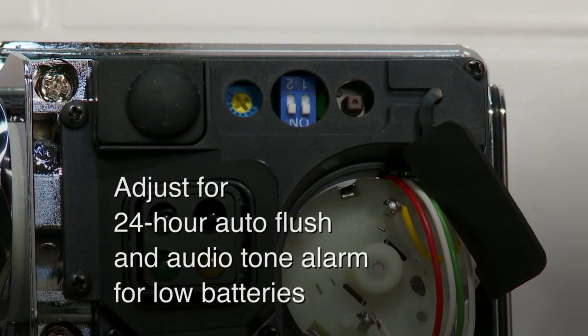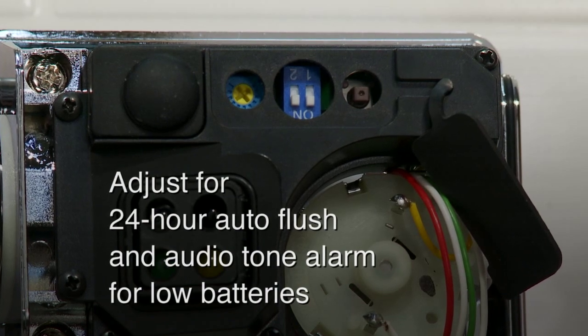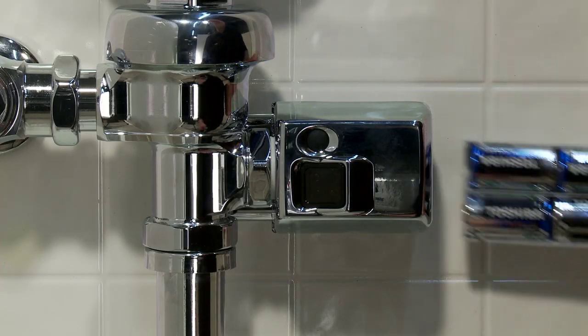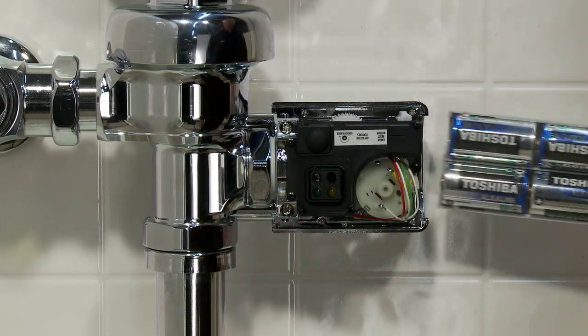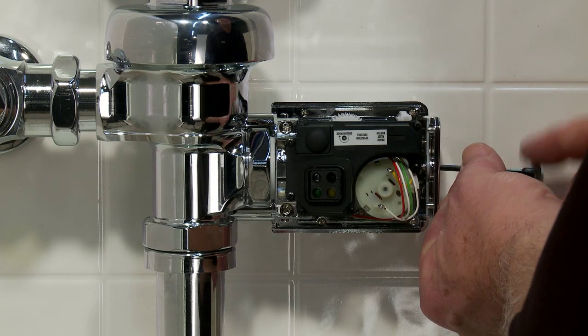The Auto Flush toilet unit may be adjusted for 24-hour Auto Flush and Audio Tone Alarm for low batteries. To adjust the Auto Flush unit after activation, first remove the battery compartment and the cover and then replace the battery compartment tray.